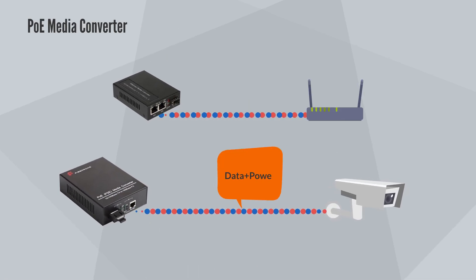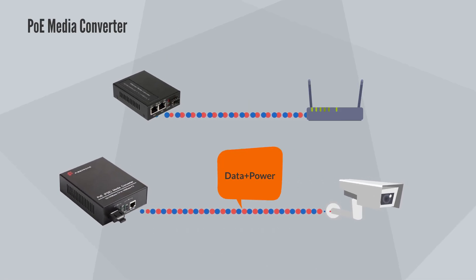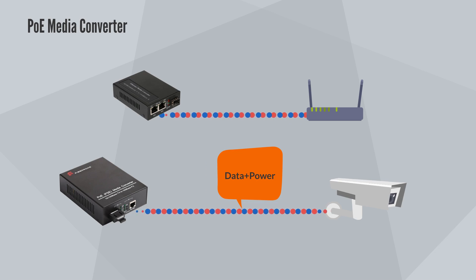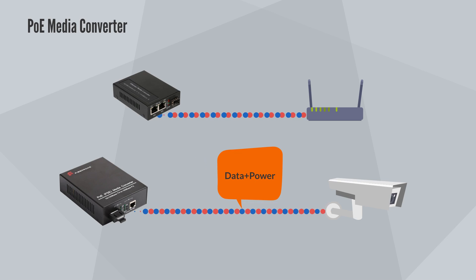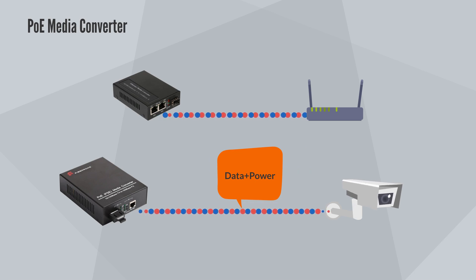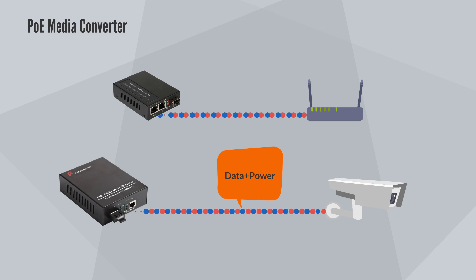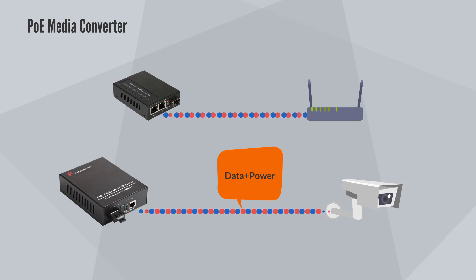Power over Ethernet media converters use the Ethernet standard and supply power and data over a single cable. This media converter is typically used to power security cameras, IP phones, and wireless access points.